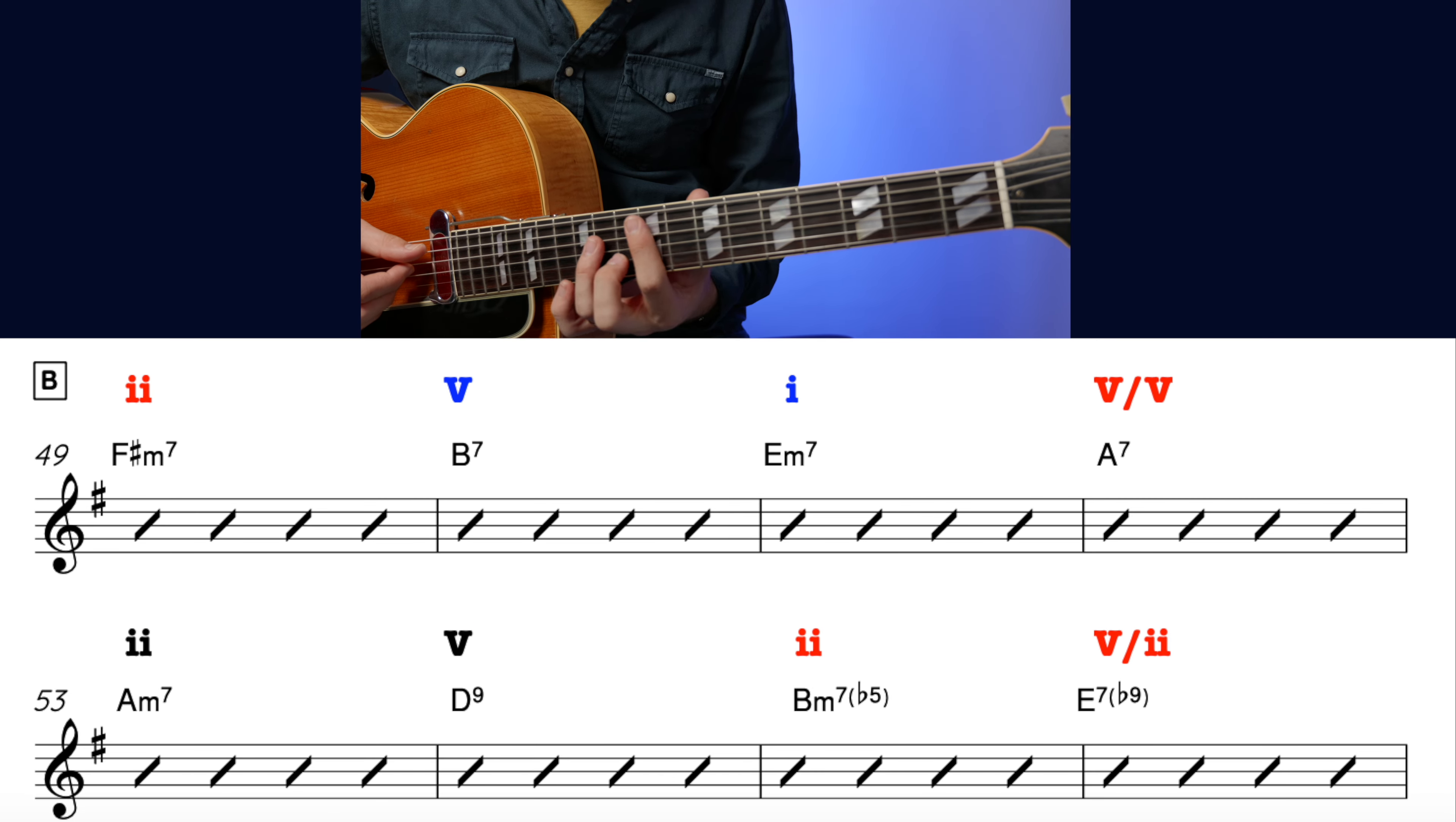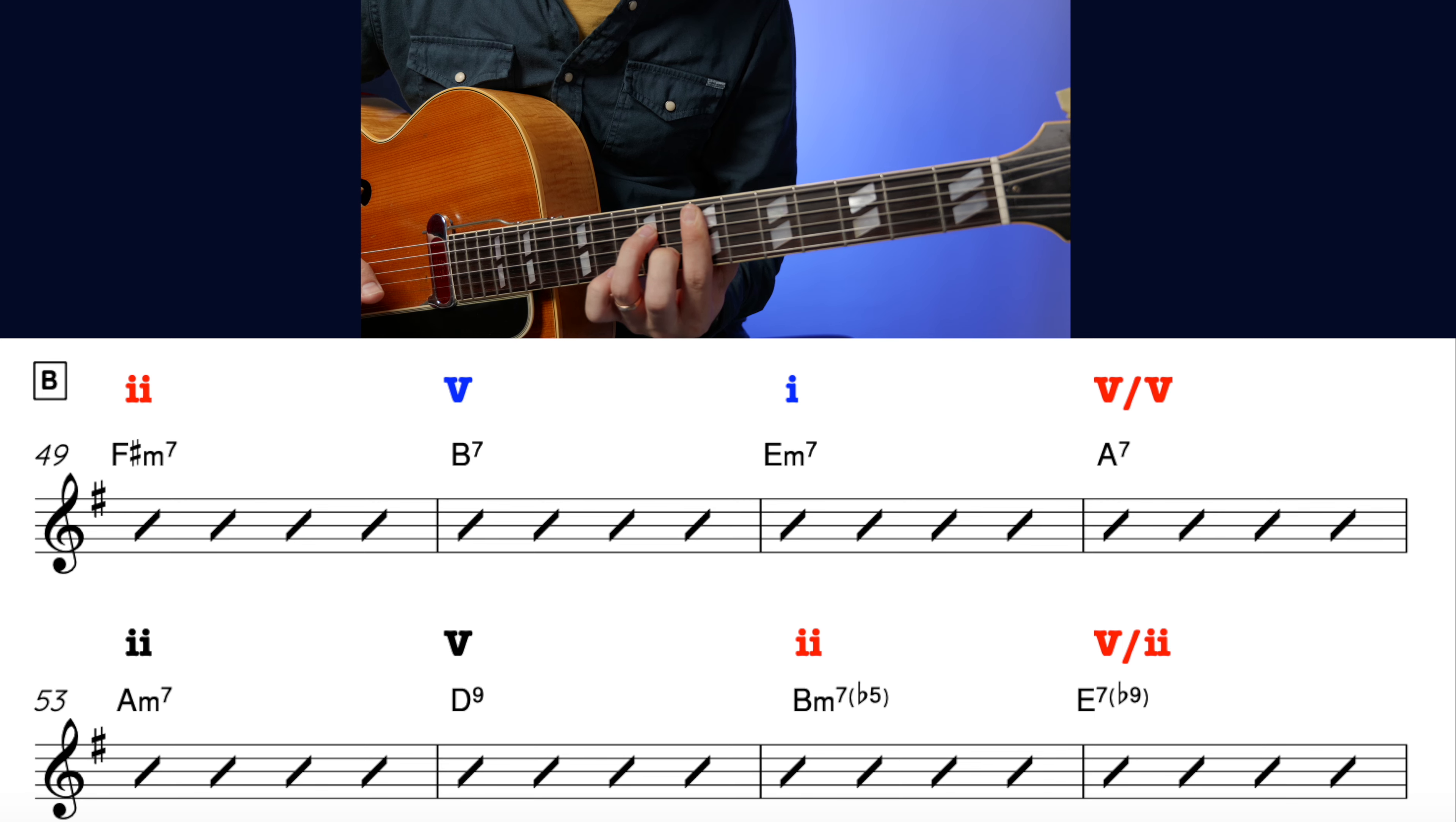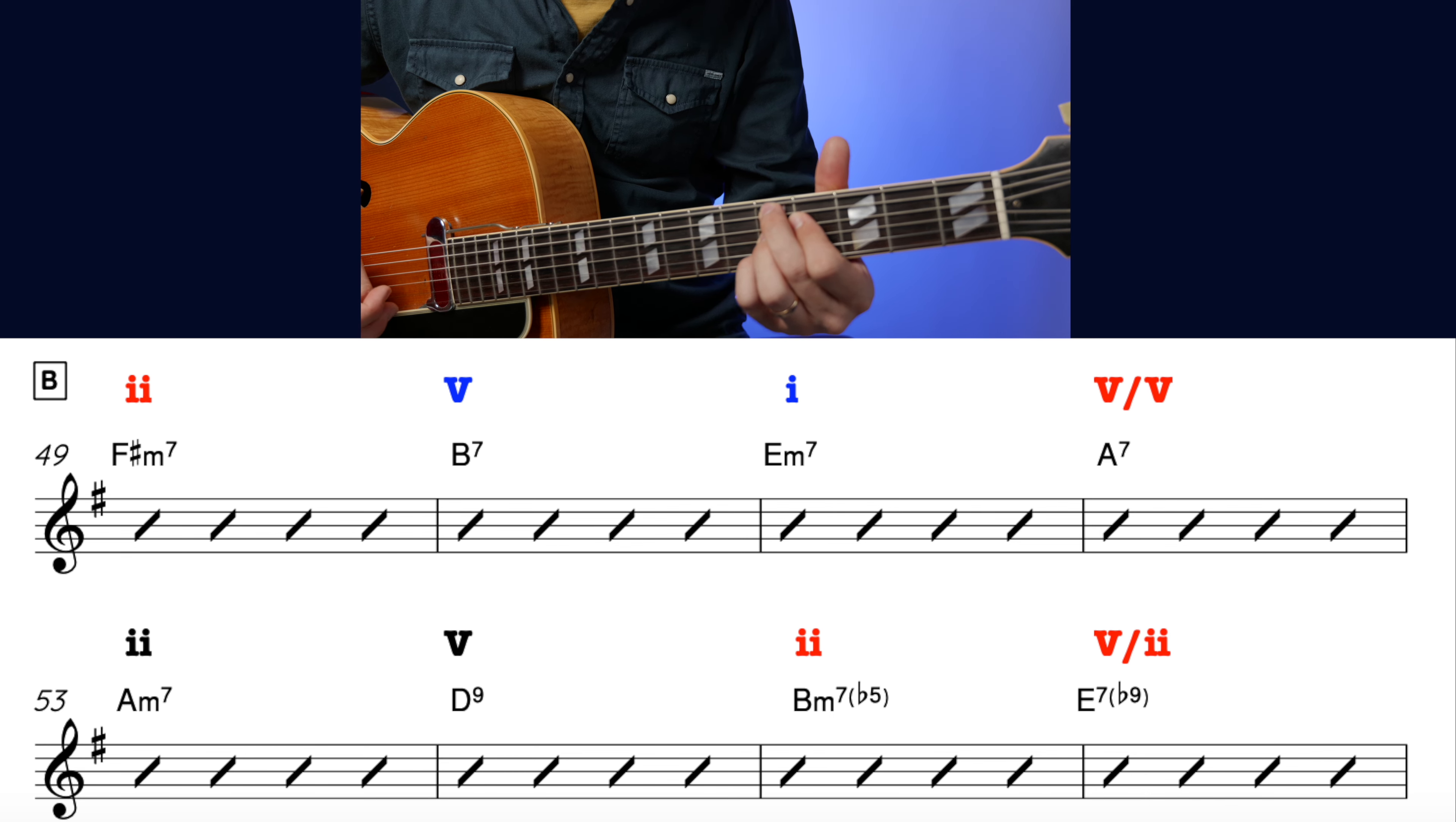B section starts in exactly the same way as the A section. So we're going 2, albeit with minor 7, to 5, to chord 1. And then we've got the A7 leading towards the D9. Turning that A7 into chord 2, which we're now setting up a 2-5 from the key of G major. But we don't get a resolution here. That's going to come a bit later.